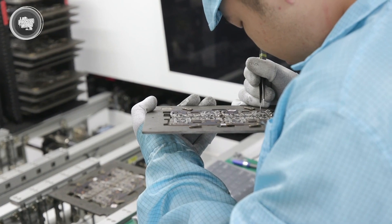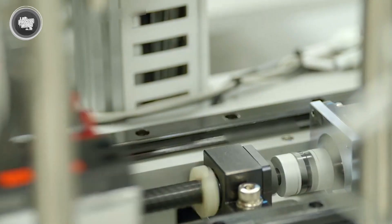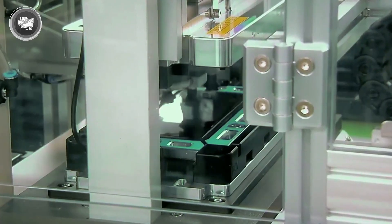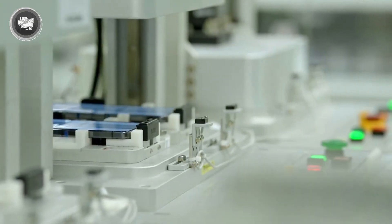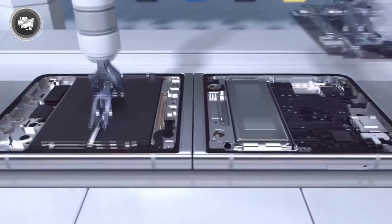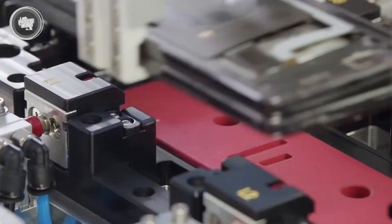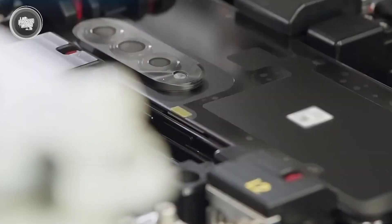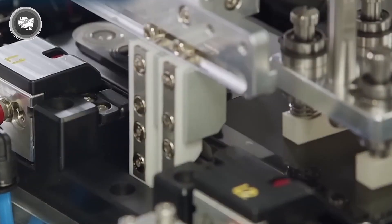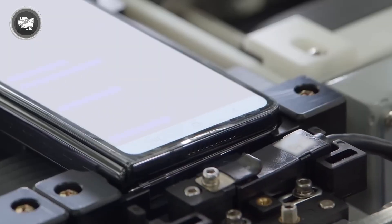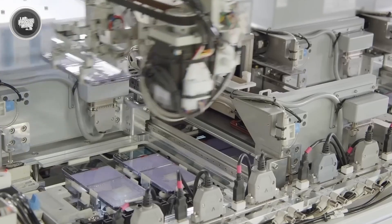After that, the phone starts to take shape. The AMOLED display is carefully aligned and attached to the body. A robot lowers it into place using suction and guided sensors to ensure perfect positioning. Batteries are installed next, followed by the camera modules, which require fine-tuned alignment for them to function properly. Next, the phone gets sealed up. The front and back casings are fitted together with strong adhesives or ultrasonic welding, depending on the model. Waterproof models get extra attention here with rubber gaskets or seals added around key areas like the SIM tray and charging port.